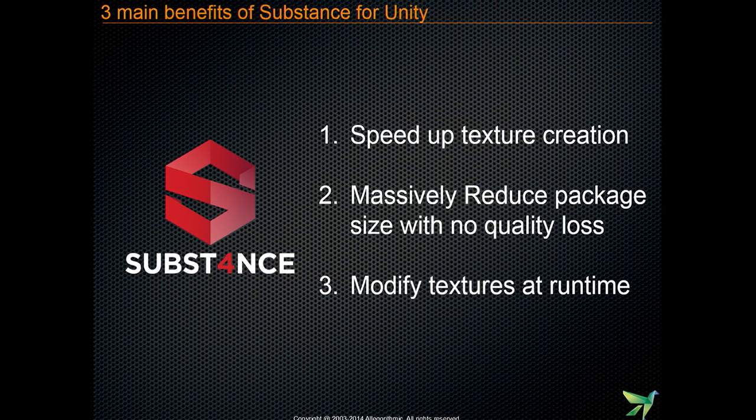The three main advantages of using Substance for Unity and any game development platform: number one is speed up texture creation. Today it's mostly used to help produce textures faster, and faster also means better quality because you have more time to iterate. Also, reduce the package size.